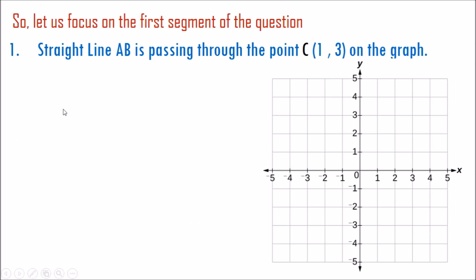Let's focus on the first segment of the question. A straight line AB is passing through the point C where x is 1 and y is 3. Let's go find our point C. Our point C is right here — this is point C where x is 1 and y is 3.